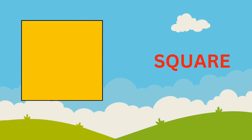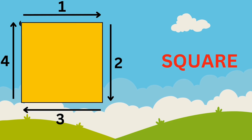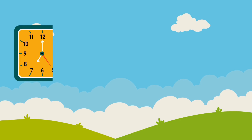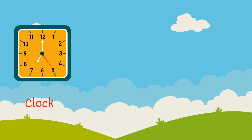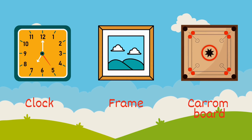Square. A square has four equal sides and four corners. Let's see which objects we have in our surroundings which are square in shape. Wall clock, photo frame, carom board — they are square in shape.